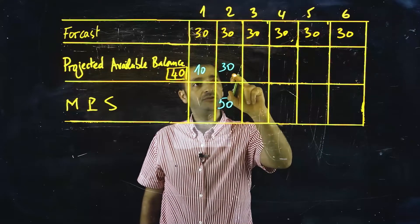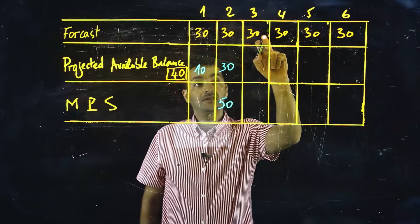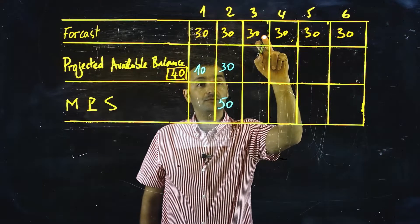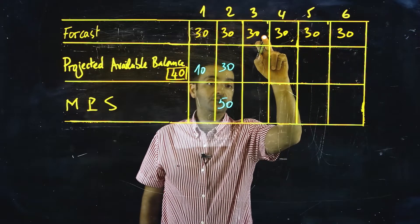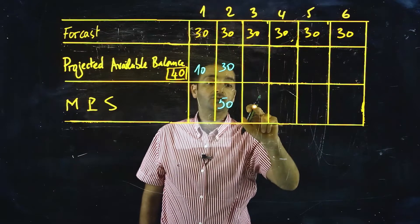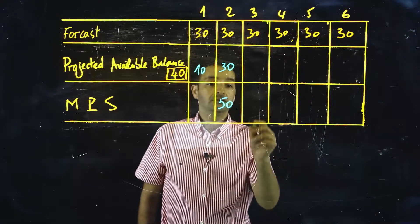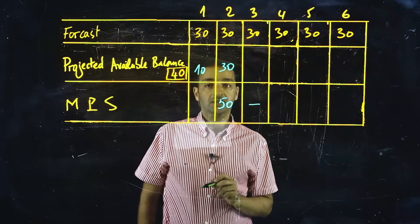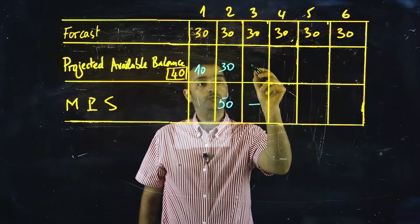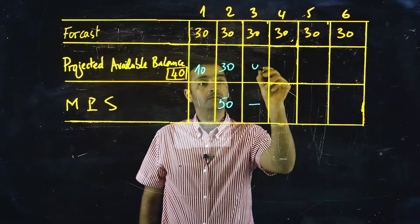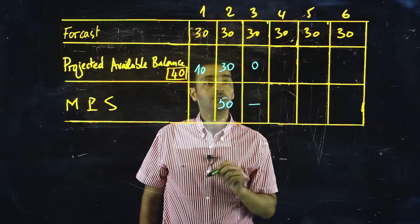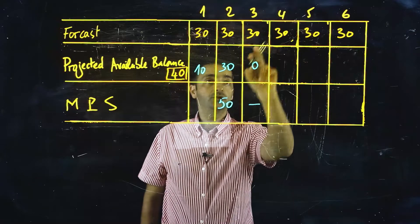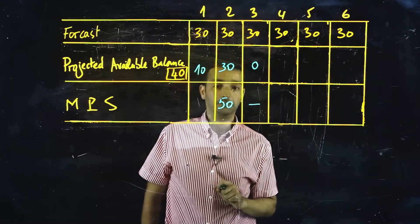30 units is enough to cover the forecast for the third period, so we don't need to schedule an MPS. But the new projected available balance will be zero — 30 minus 30.